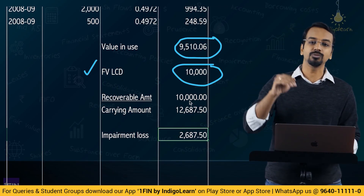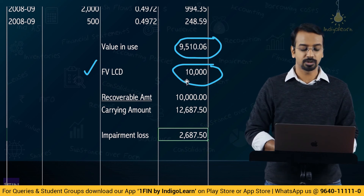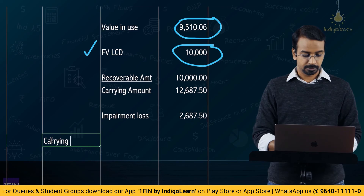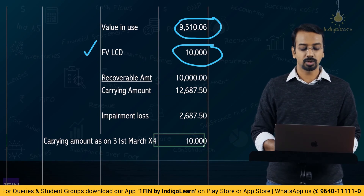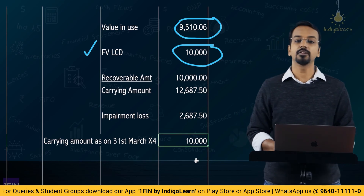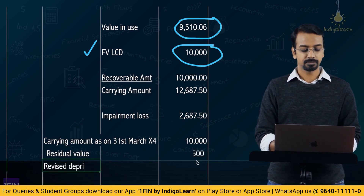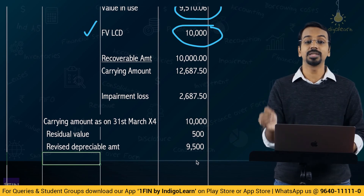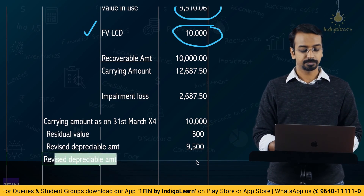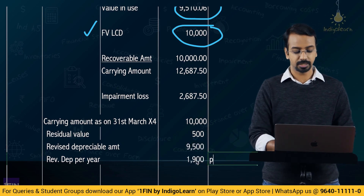As a result of the impairment loss, you bring down the carrying amount of the property, plant and equipment to 10,000. Residual value remains unchanged at 500. Revised depreciable amount = 10,000 minus 500 = 9,500. This has to be depreciated over the remaining 5 years, so revised depreciation per year = 9,500 ÷ 5 = 1,900 per year.